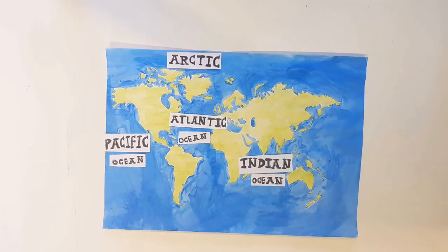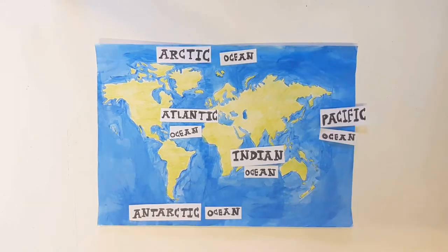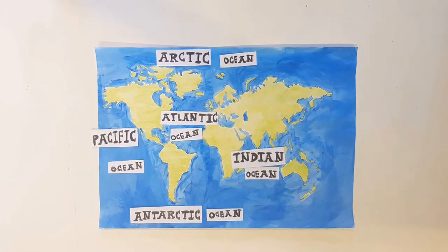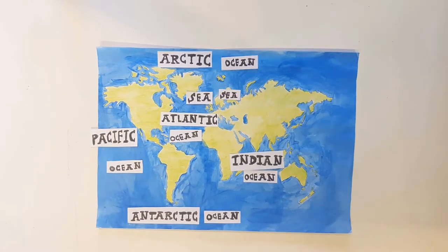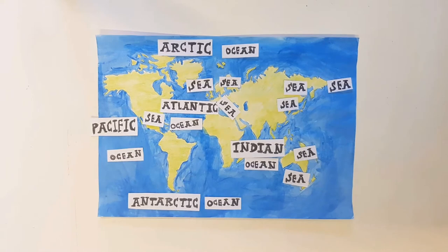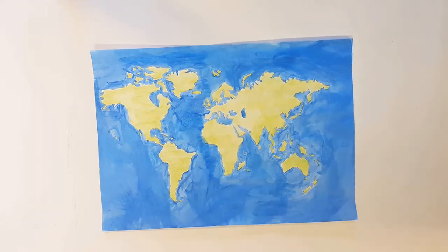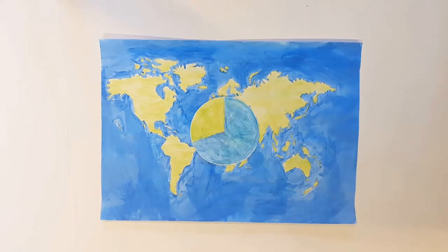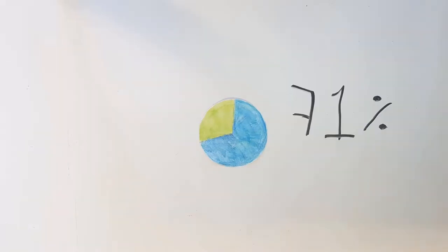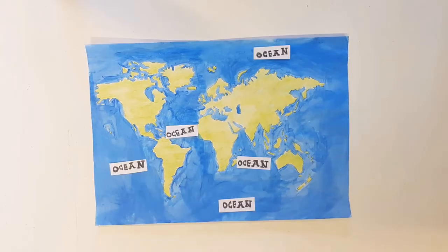There are five oceans in the world: the Atlantic, Pacific, Indian, Arctic, and Antarctic oceans. But there are lots of seas all around the world. Oceans and seas take up 71% of all the space on Earth, which means there's only 29% left for the land.